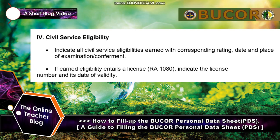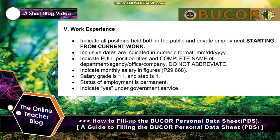Section 4 — Civil Service Eligibility: indicate all civil service eligibilities earned with the corresponding rating, date, and place of examination. If an earned eligibility entails a license or a Form 1080, indicate the license number and its dates of validity.